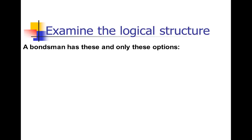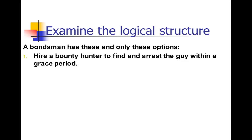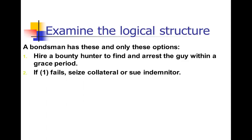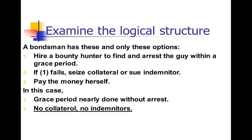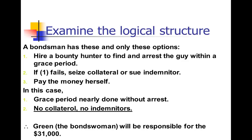There's also a logical set of logical arguments here — like a mathematical set. A bondsman has these and only these options, exactly three options. You've got to hire a bounty hunter to find and arrest the guy within the grace period — that's one option. Or, if that fails, you can seize the collateral or sue the indemnitor. And then if that fails, you've got to pay the money yourself. Those are the three options — one of those things has to happen. So in this case, out of those three options, the grace period is done and there's no arrest yet, there was no collateral, there was no indemnitor. So what's the conclusion? There's only one option left: Green, the bondswoman, has to pay that $31,000 herself.